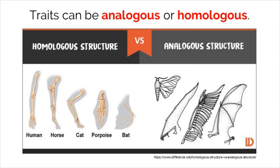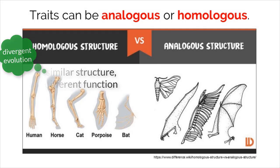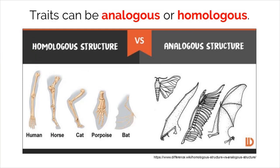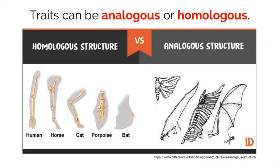Cladograms can also show homologous and analogous structures. Homologous structures are those that have a similar structure but a different function, which exists due to common ancestry through divergent evolution. Analogous structures are defined as when two organisms possess completely different structures that fit the same function, due to selective environmental pressures through convergent evolution.